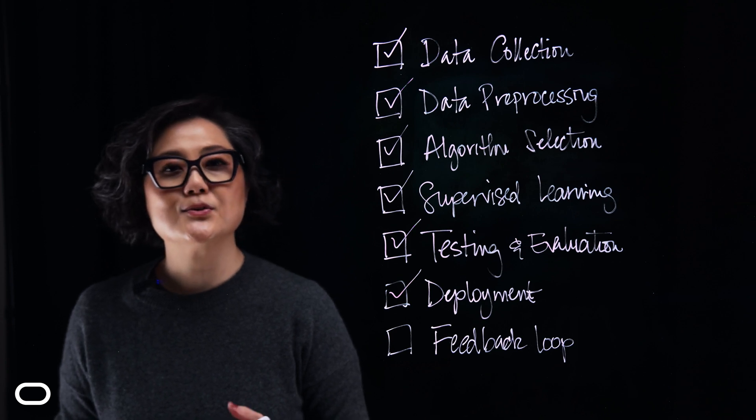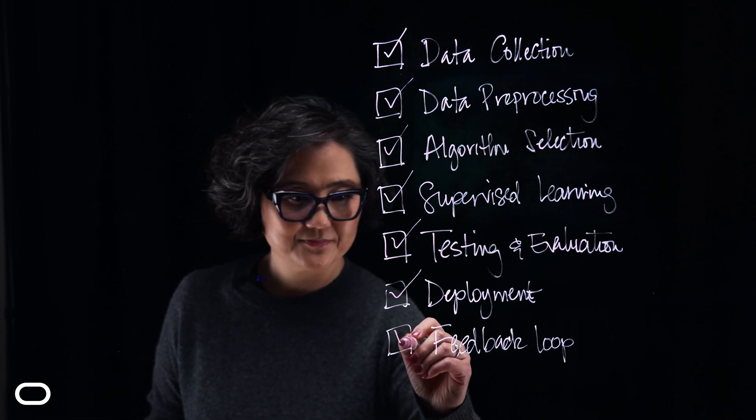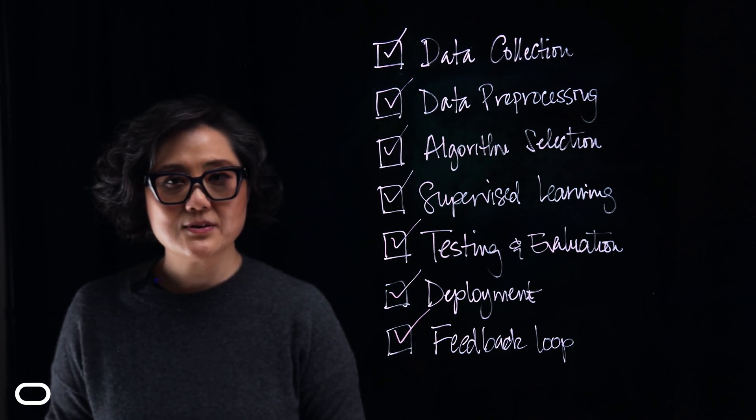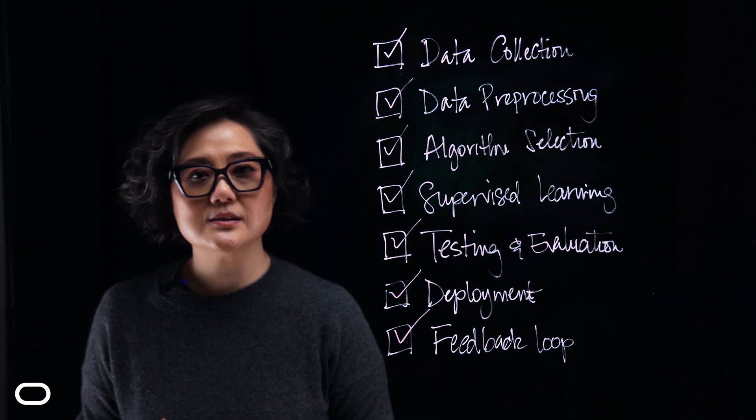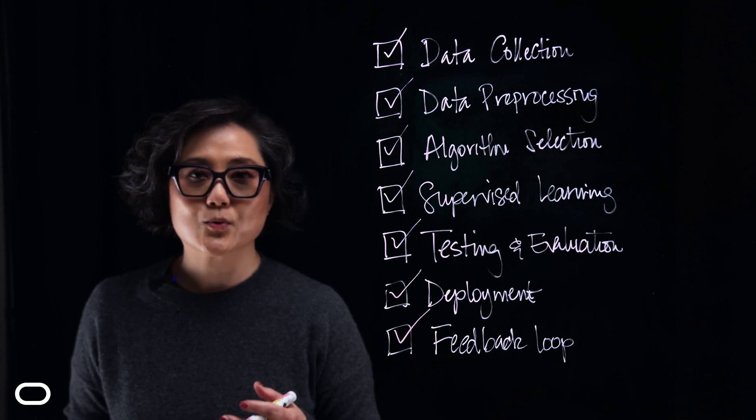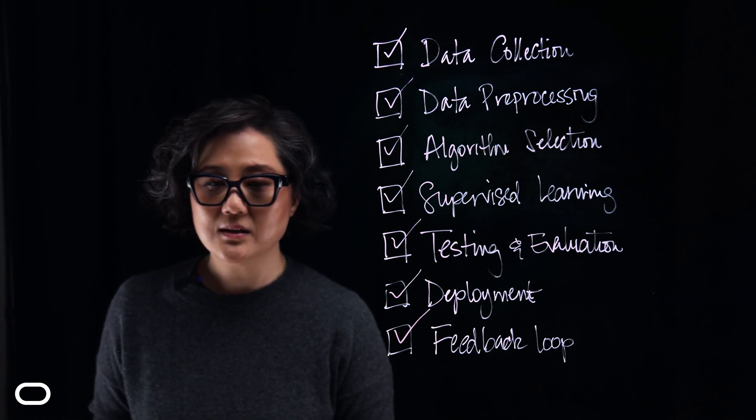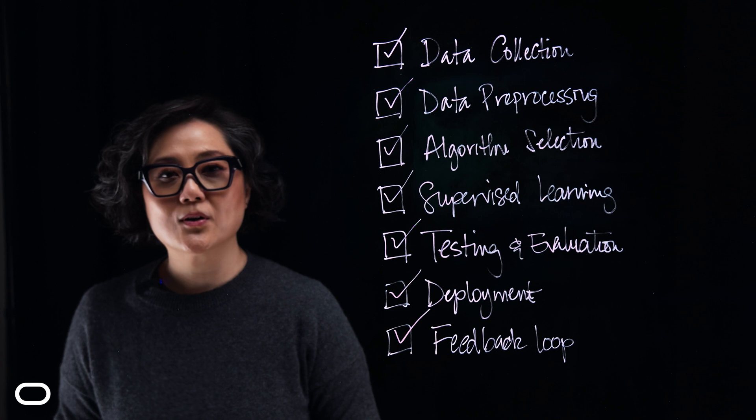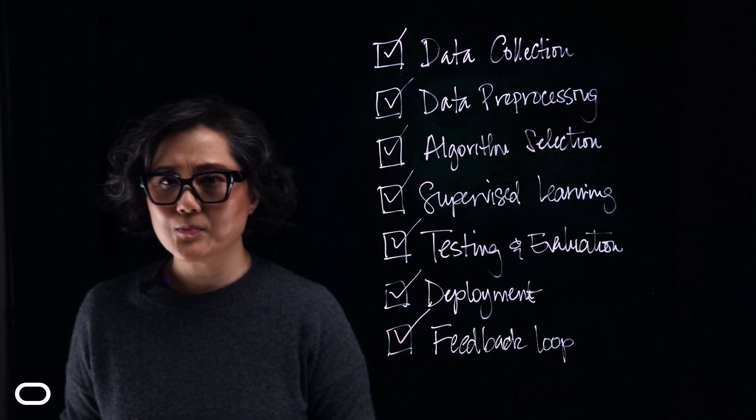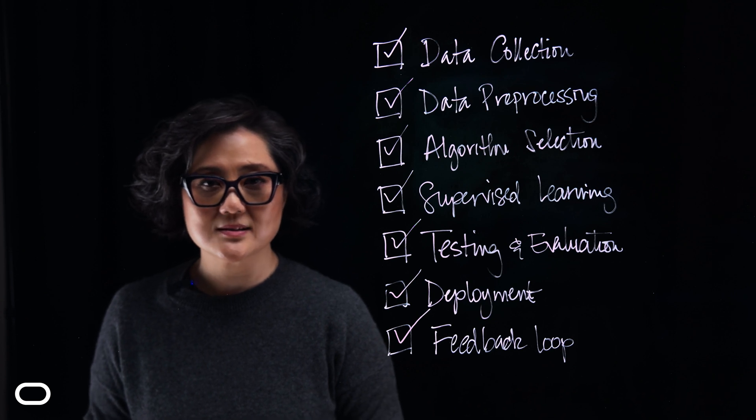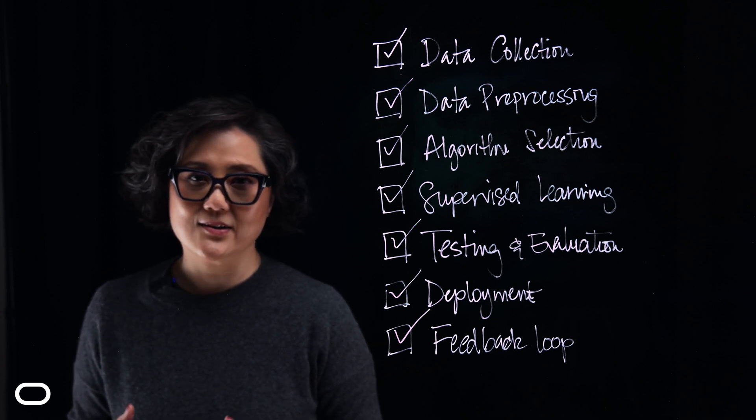After deployment, you need a feedback loop. In many cases, AI systems have a feedback loop where they continuously learn and improve over time. This can involve retraining the model with new data or fine-tuning its parameters based on user feedback. Overall, the workings of AI involve a complex interplay between algorithms, data, and iterative learning processes to achieve that desired outcome.